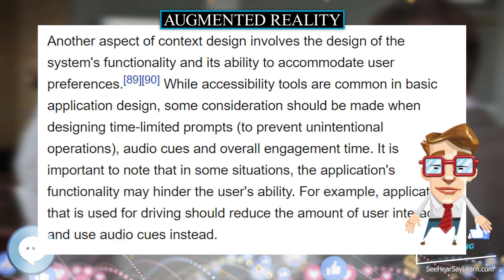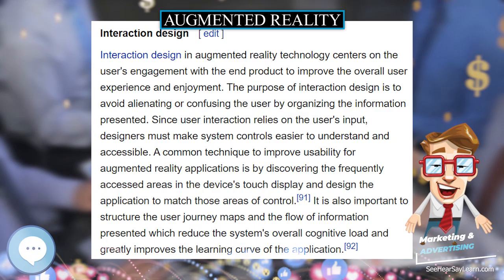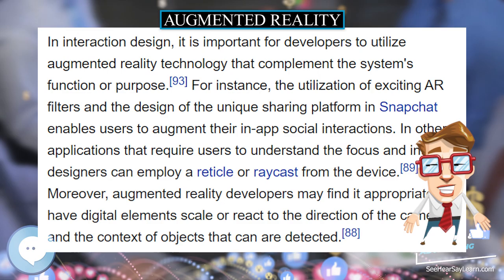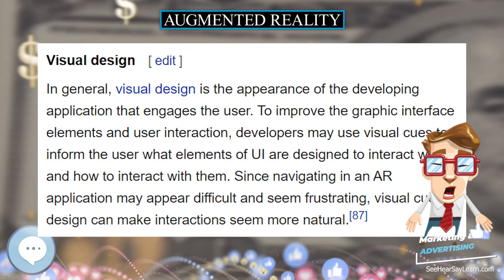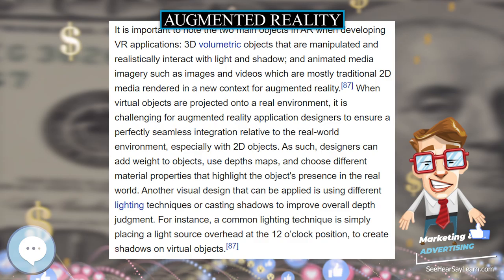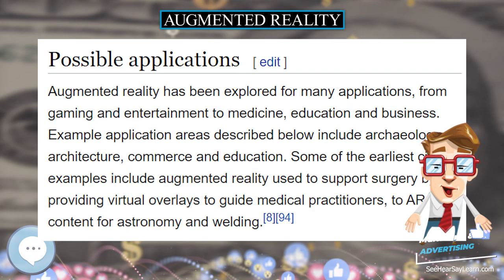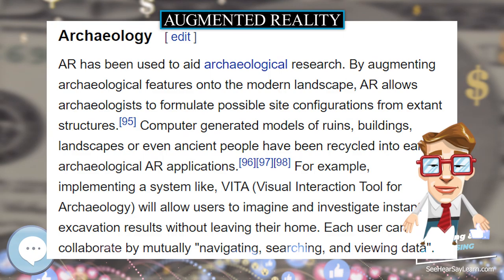Augmented reality markup language (ARML) is a data standard developed within the Open Geospatial Consortium (OGC), which consists of extensible markup language (XML) grammar to describe the location and appearance of virtual objects in the scene, as well as ECMAScript bindings to allow dynamic access to properties of virtual objects. To enable rapid development of augmented reality applications, some software development kits (SDKs) have emerged.